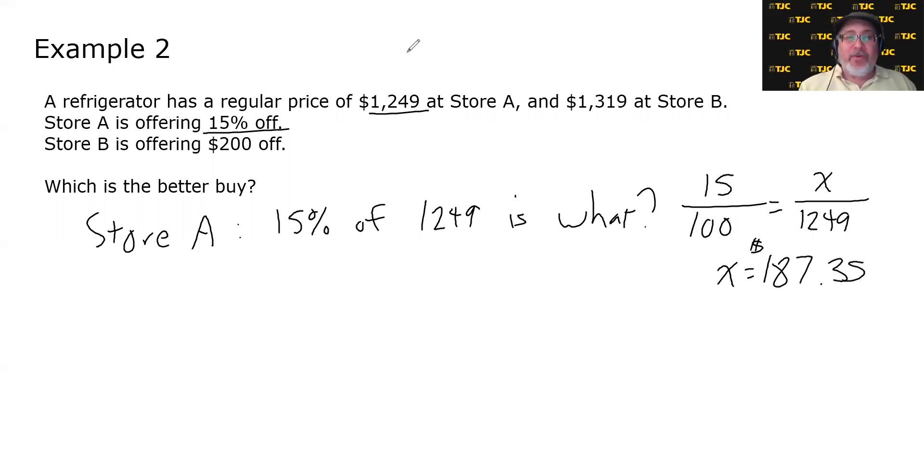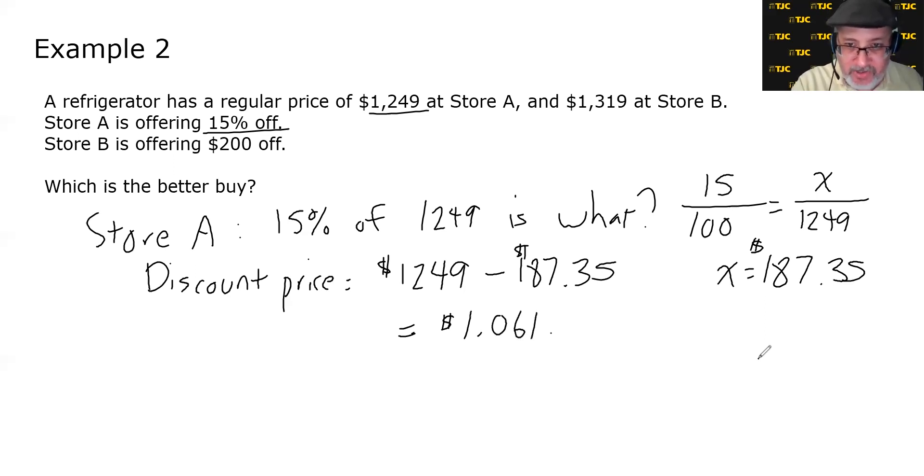Now, these are dollar amounts, but is that the price of the refrigerator? It is not. It is the price of the discount. So in this problem, there's a follow-up move because the discount price is the original price. So the discount price is the original price, $1,249 minus 15% of it, which is $187.35. And that is equal to $1,249 minus $187.35, $1,061.65.